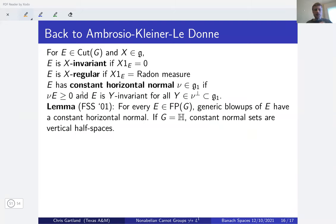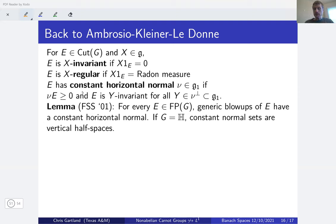Franchi-Serapioni-Serra Cassano proved their theorem about blow-ups of finite perimeter sets in the Heisenberg group by first showing generically the blow-up becomes a constant normal set — and this part works for any Carnot group — then using algebraic properties specific to the Heisenberg group to conclude that constant normal sets must be vertical half-spaces. This follows the same outline as for Euclidean space: prove first that the blow-up has constant normal, then that constant normal sets must be half-spaces.